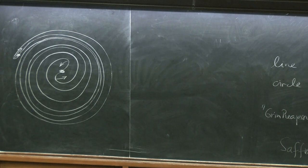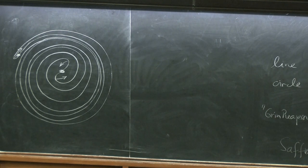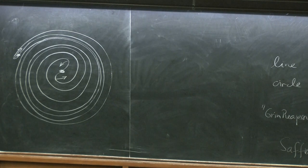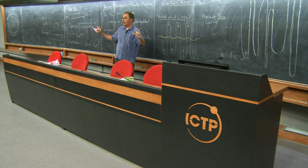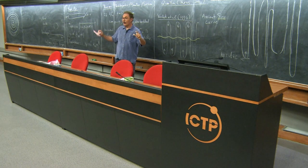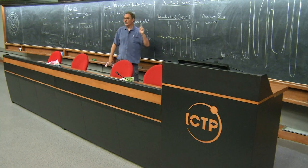I would guess that the examples Qian Yu found are the only ones with finite total curvature. Ancient solutions with finite total curvature would have all Grim Reaper limits, and I would say they all have to have parallel asymptotes and should be in that list.